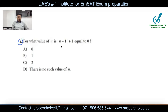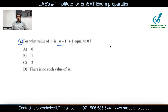Example two: for what value of n is |n − 1| + 1 = 0? They're asking for what value of n this entire result turns to 0. The minimum value for an absolute expression is 0 — it can never be less than that. Absolute value means how far a number is from 0 on a number line. For example, the distance from 0 to 3 is 3 units.